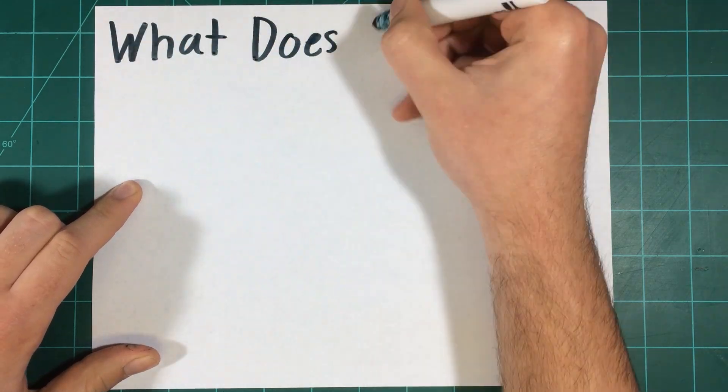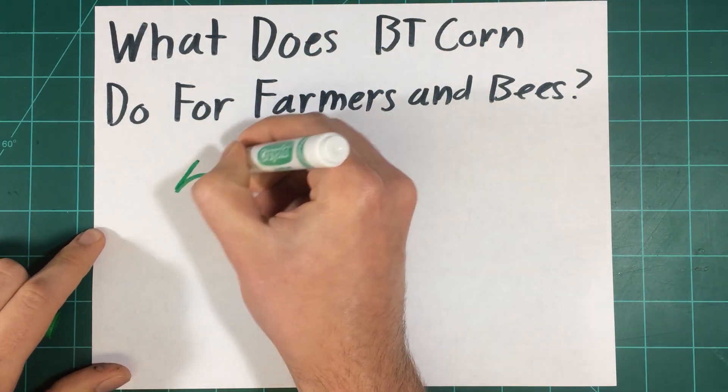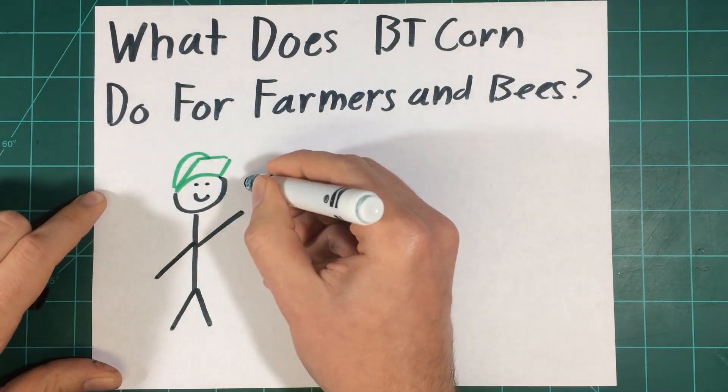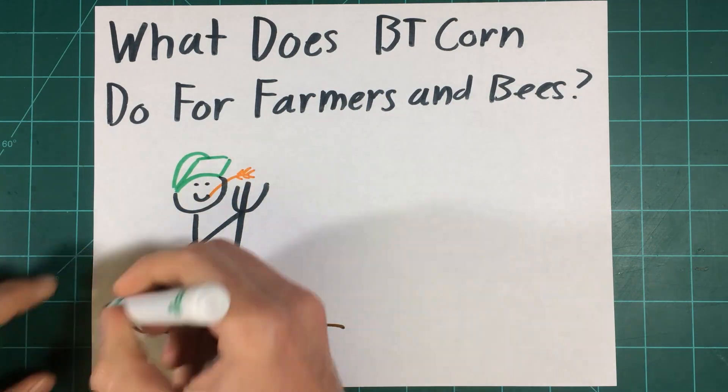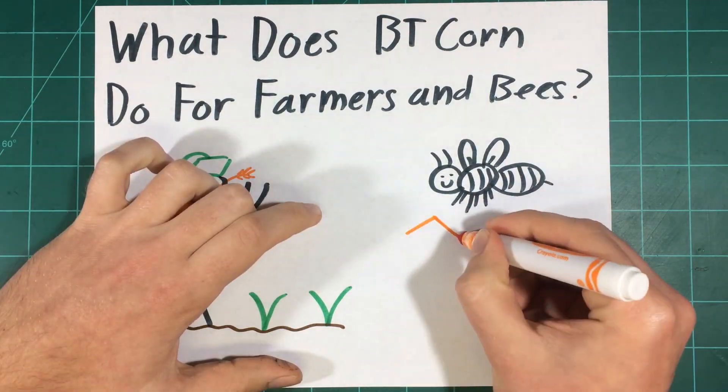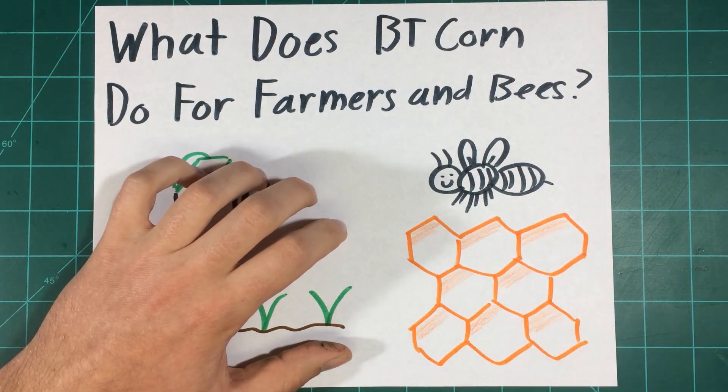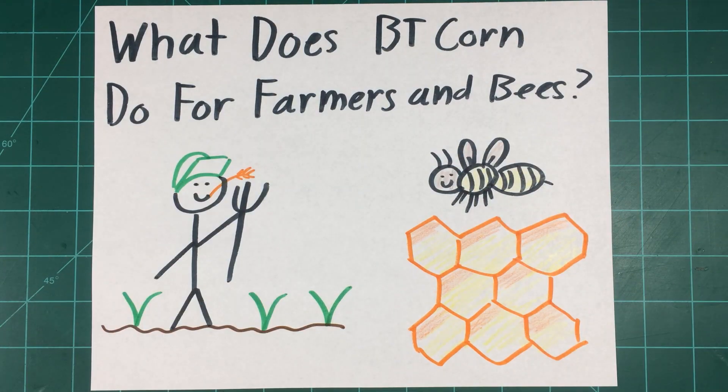So what are some of the major benefits BT sweet corn provides to farmers that conventional non-BT corn does not? There are many advantages to BT corn production, but the three major benefits we'll be talking about today include reduced insecticidal spray applications, reduced negative impact on beneficial insects, and increased crop yield.